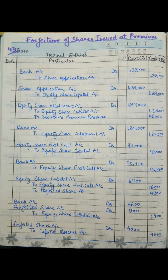After forfeiting, the next step is to reissue these 800 shares at 7 rupees per share as per the question. The entry is: Bank Account debit, Forfeited Share Account debit, to Equity Share Capital Account. As 7 rupees per share were received and there are 800 shares, 800 into 7 gives 5,600, written in front of Bank Account in the debit column. To find the Forfeited Share Account debit, subtract 5,600 from 6,400, which gives 800 rupees.